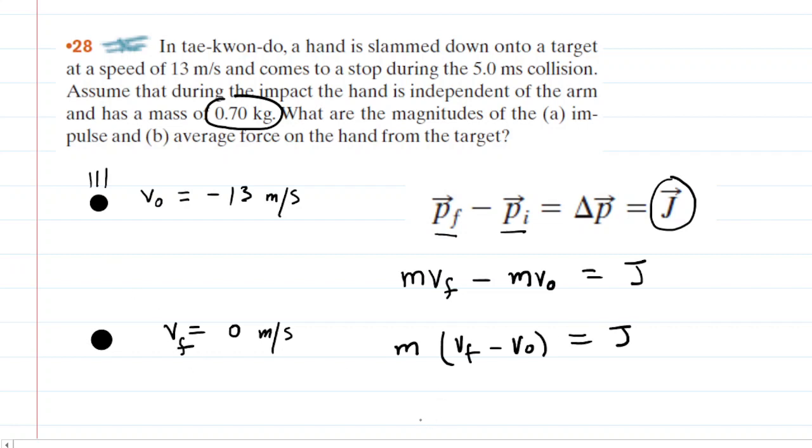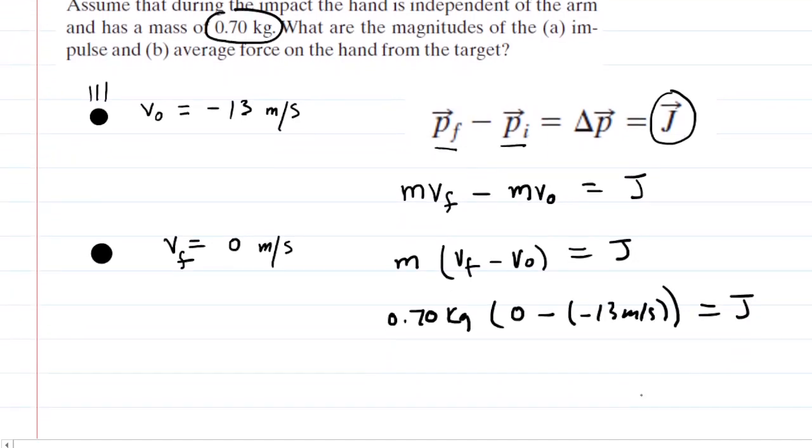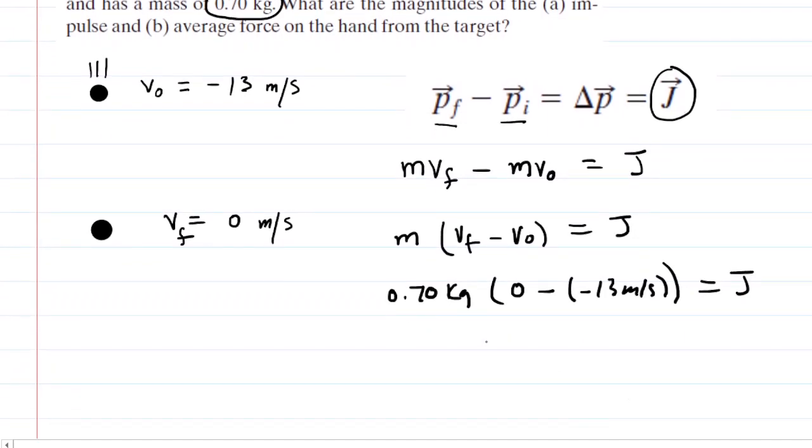Now, it's just a matter of plugging in the known values here for part A. We know the mass is 0.7 kilograms. The final velocity is 0 meters per second minus the initial. Be careful here. You're going to be subtracting a negative 13 meters per second, so you'll end up adding that. And that allows us to pick up our calculator and punch that in. We end up getting 9.1, and this would be kilograms times meters per second. That would be the magnitude of the impulse delivered to the hand. That is the correct answer to part A.